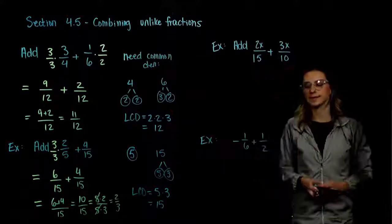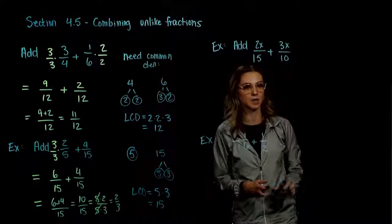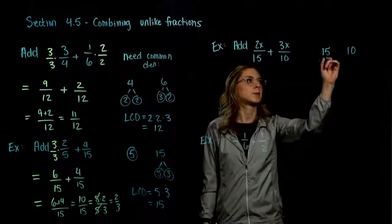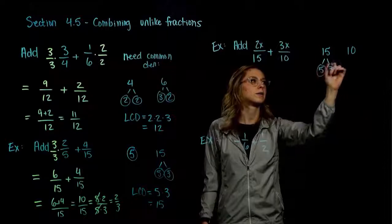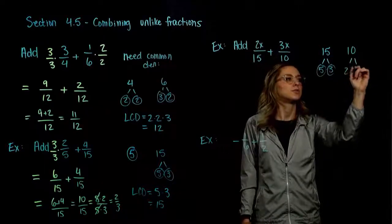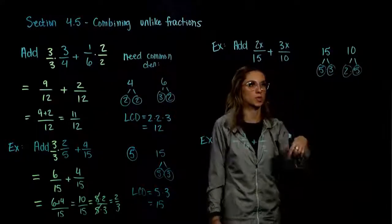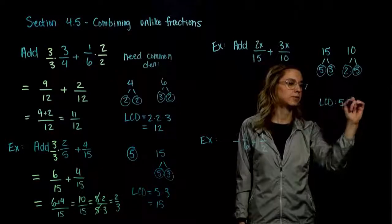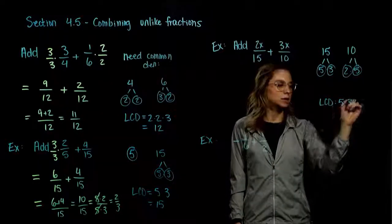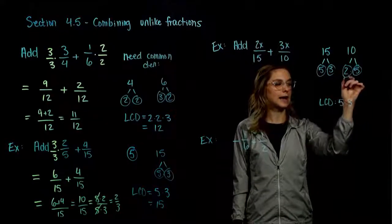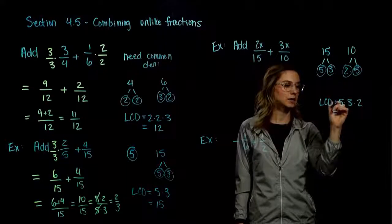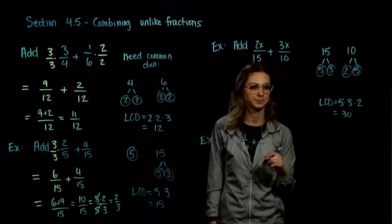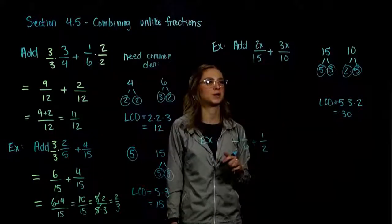We want to find the least common denominator between 15 and 10. Let's take each and break them into their primes. 15 can break up into 5 and 3, both prime. 10 can break up into 2 and 5, both prime. Building our LCD: start with 15, take all those factors. What is our LCD missing that 10 has? A factor of 2. So our least common denominator is 5 times 3 is 15, and 15 times 2 is 30. The smallest common denominator between 15 and 10 is 30.